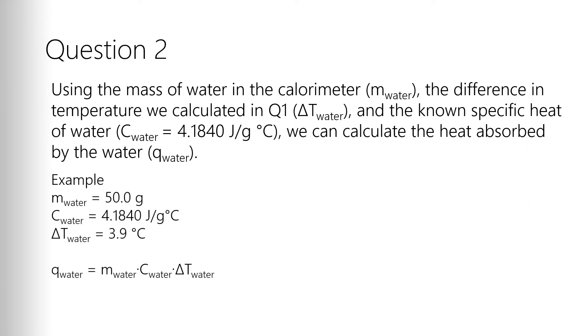The calculation for q is pretty straightforward. q equals mc delta t. We know m, we know c, we know delta t, so we just plug them into the equation, and we get 815.88 joules.